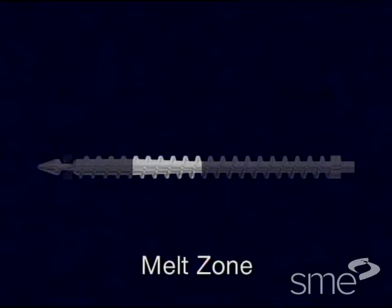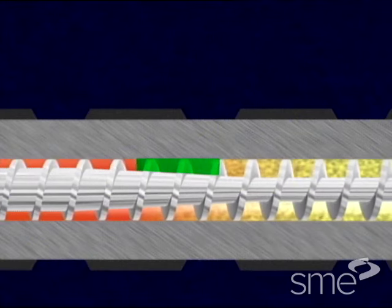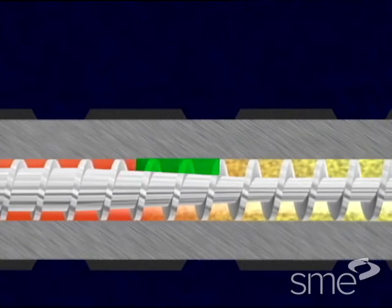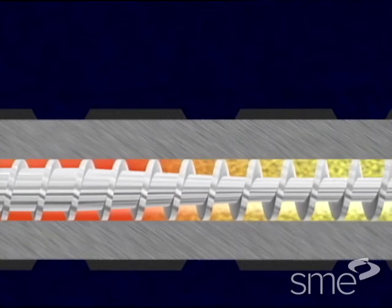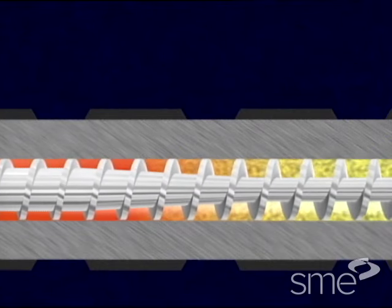The second zone, called the melt zone, has a decreasing flight depth which reduces the plastic volume. This causes the plastic molecules to rub harder against each other, plasticizing the material.